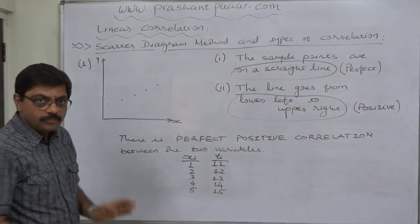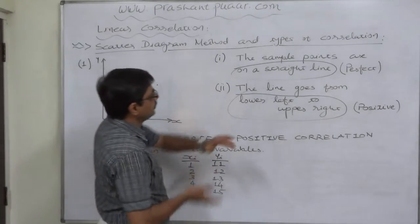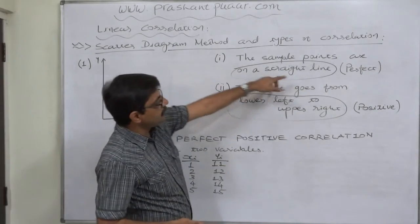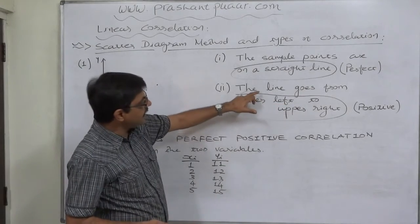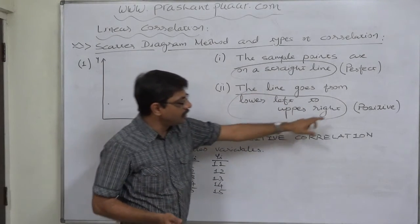So, the observation suggests that all the simple points are on a straight line and the line goes from lower left to upper right.